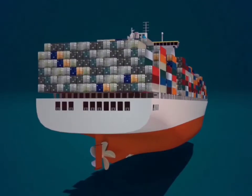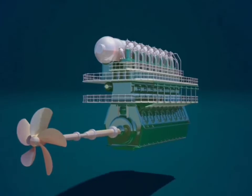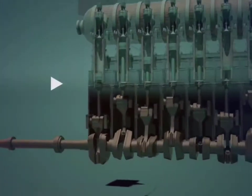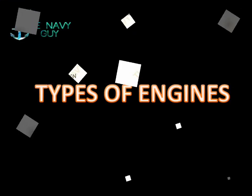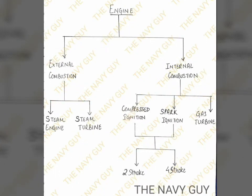Here's an animation of a marine engine being used to propel the ship forward. Now we'll talk about the types of engines. Here is a flowchart depicting the types of engines. We'll put more focus on two-stroke compressed ignition engines in our further videos.